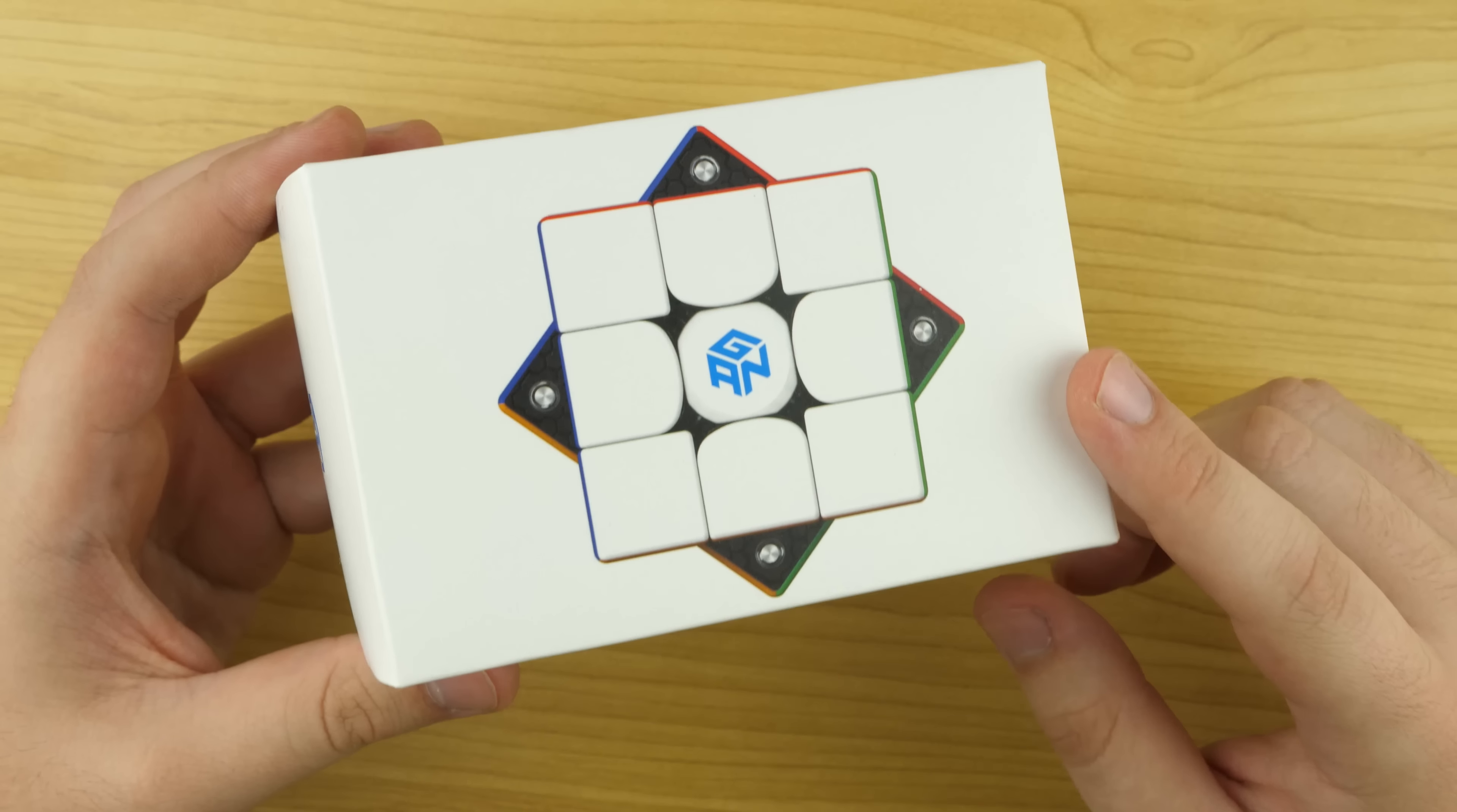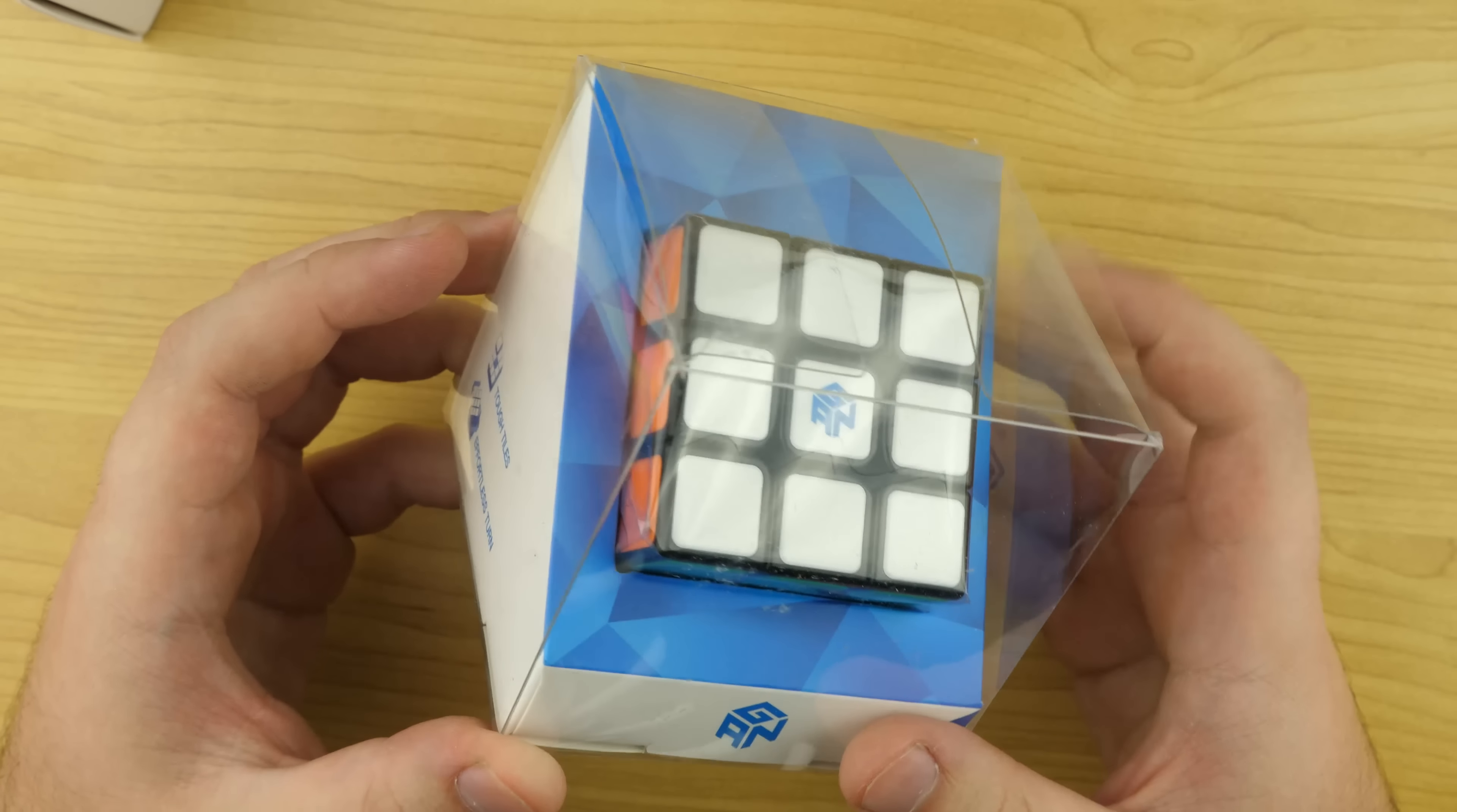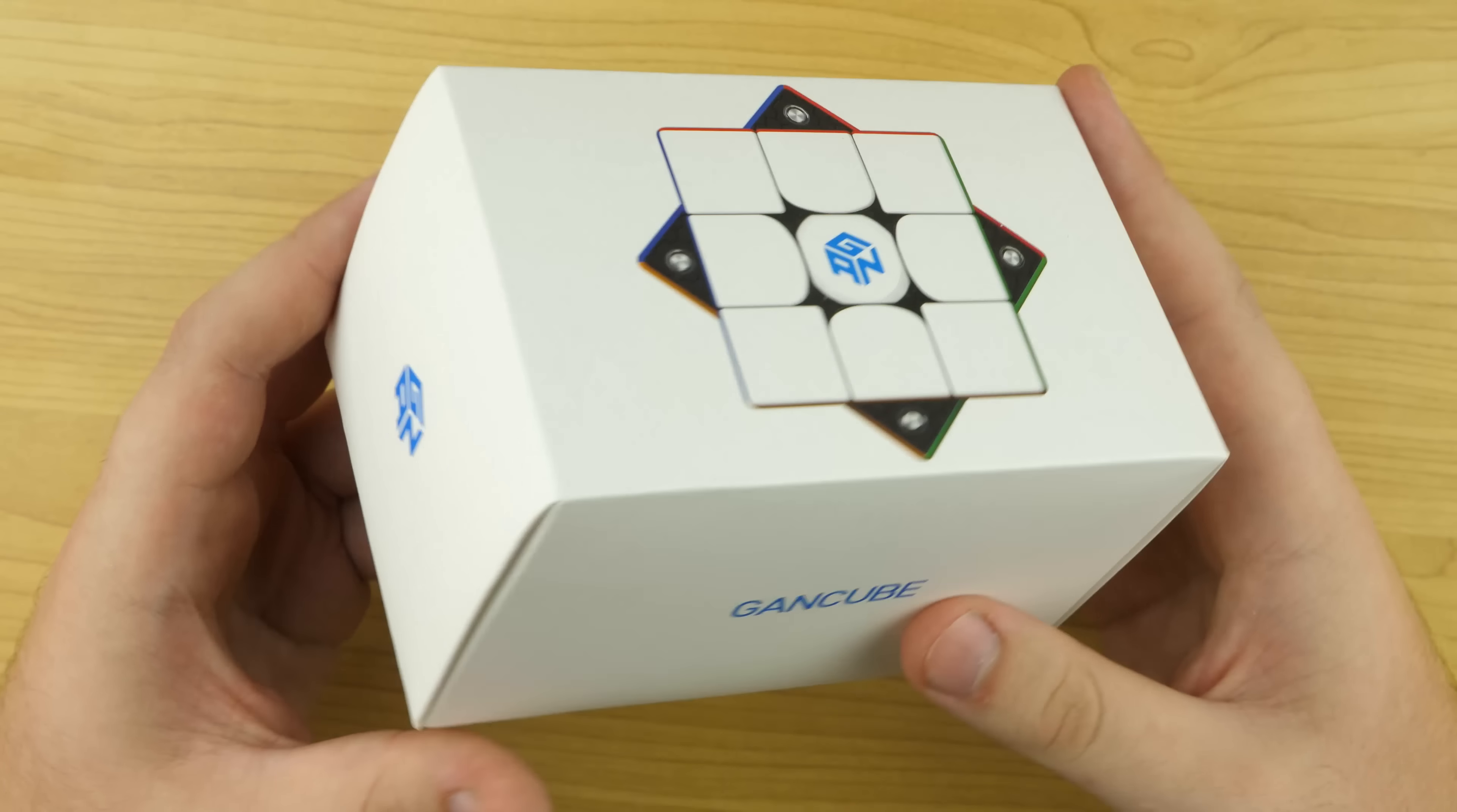So again, first place prize, the GAN 354M version 2. Second place, the Rubik's... Sorry, not Rubik's Speedcube. The GAN tiled Speedcube. And in third place will be a $25 voucher. Like, comment, subscribe. Let us know in the comment where you're from and also what you think of the brand new cube. And again, two weeks from today, we're going to be picking a giveaway winner.